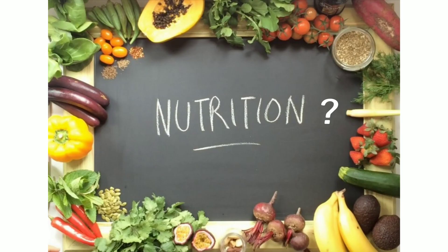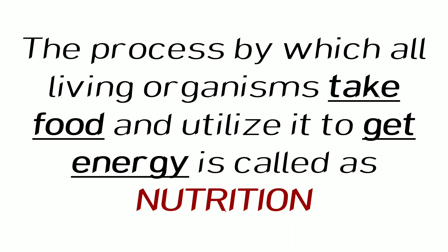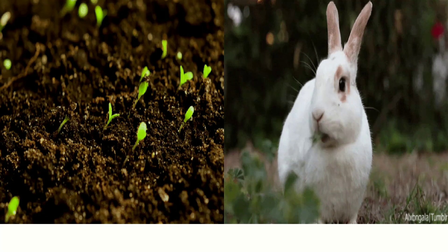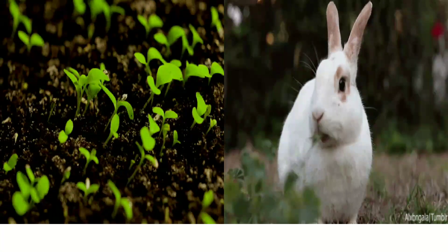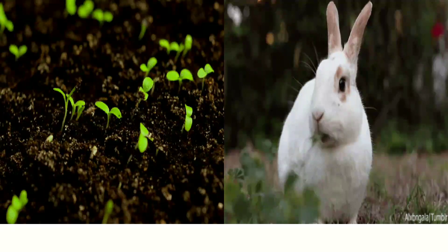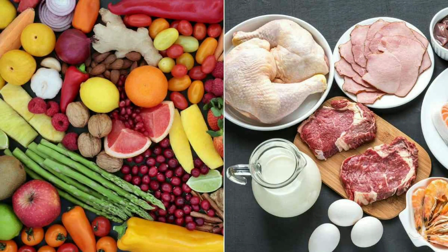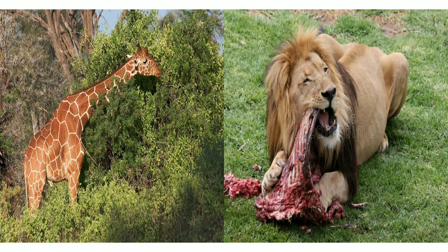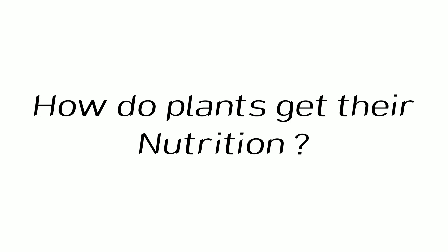Before we study about nutrition in plants, let us see what nutrition is. The process by which all living organisms take food and utilize it to get energy is called nutrition. All living organisms — plants or animals — require nutrition for their growth. We human beings obtain our necessary nutrients from both plants and animals. Even animals obtain their required nutrition from both plants and animals. But how do plants get their nutrition?